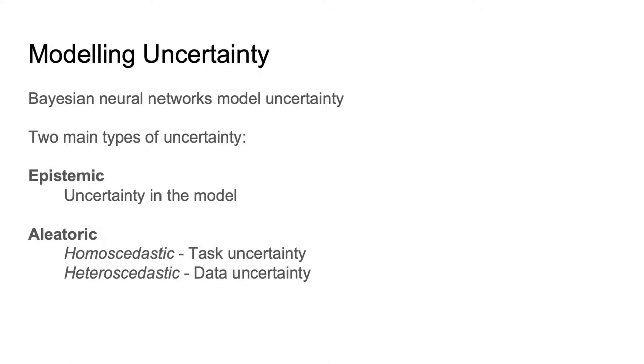The aleatoric uncertainty is further divided into the homoscedastic component, which is the uncertainty of the task, and the heteroscedastic component, which is the uncertainty due to the data. As we are interested in how data quality affects our predictions, we adopt a heteroscedastic uncertainty model, as this provides a natural way of modeling the quality of the data.